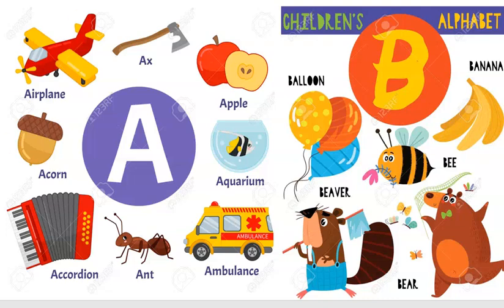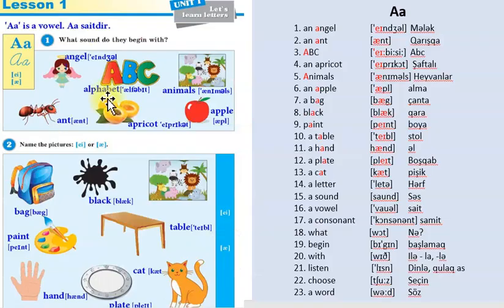Bugün isə iki hərfi öyrənəcəyik: A və B hərflərini, onların verdiyi səsləri öyrənəcəyik. Unit 1, Lesson 1. A hərfi iki səs verir: ey və ə səslərini. Nə zaman a, adətən... Bəzi istisna sözlər olur, bəzi istisna hallar olur. Amma adətən ey açıq hecalarda, ə hərfi ey səsini, qapalı hecalarda isə ə səsini verir.